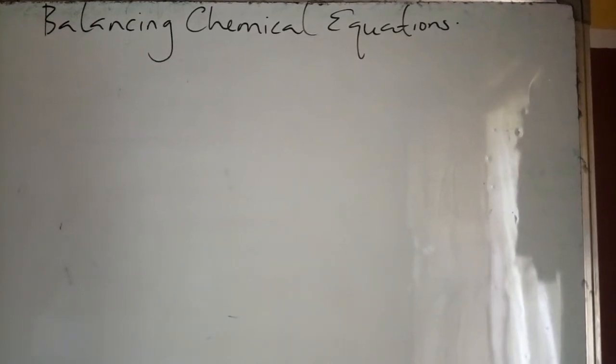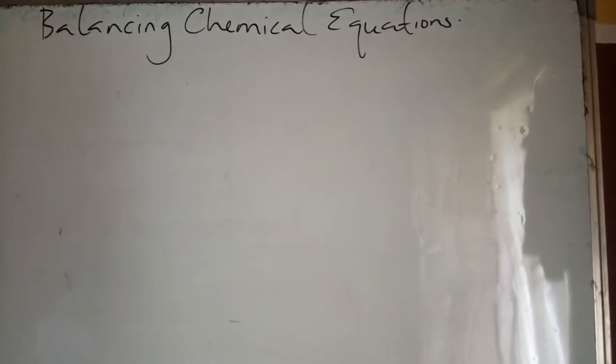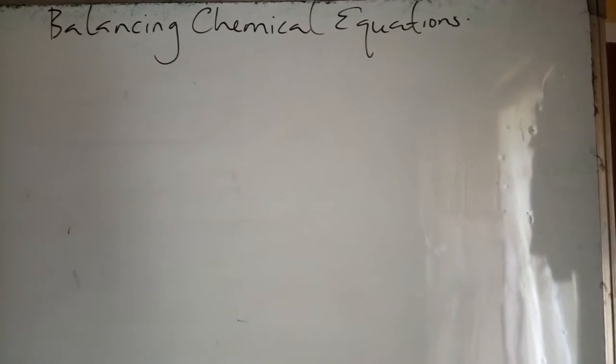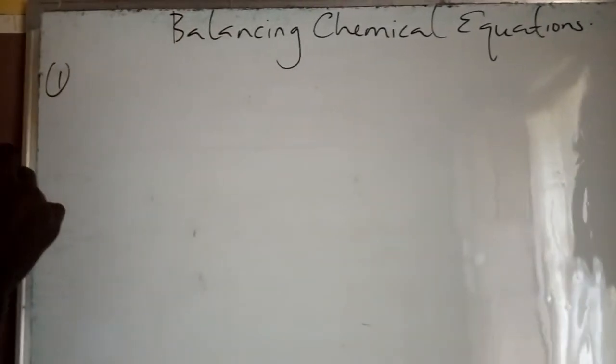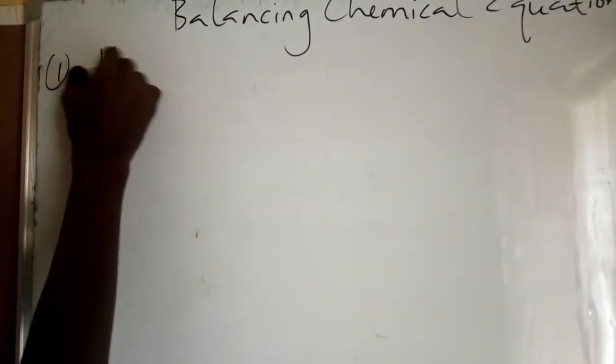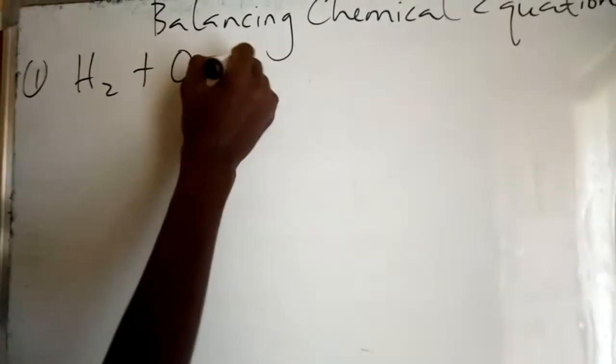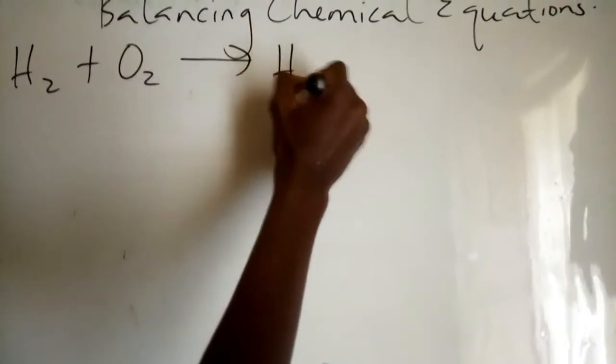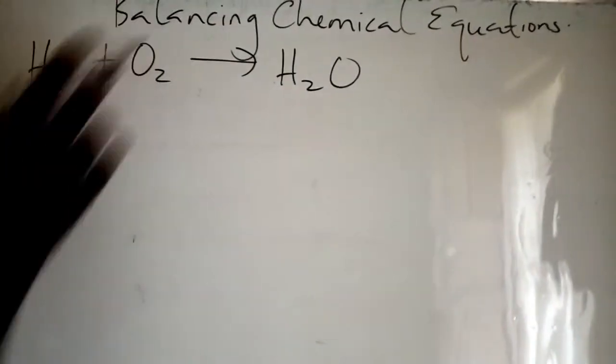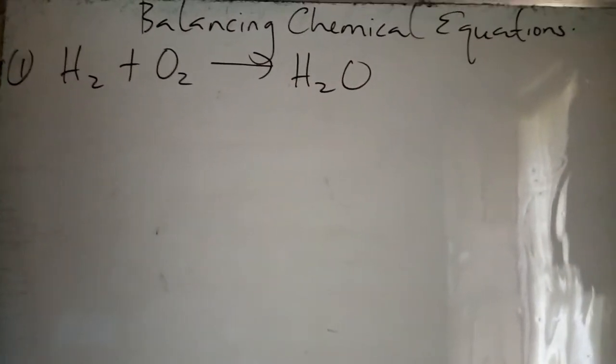Let's solve some examples. There are two methods in solving it. Let's use the inspection method. Number one, balance H2 + O2 → H2O. This is by inspection method.